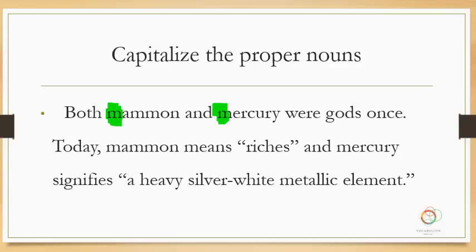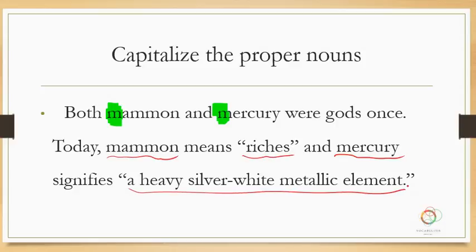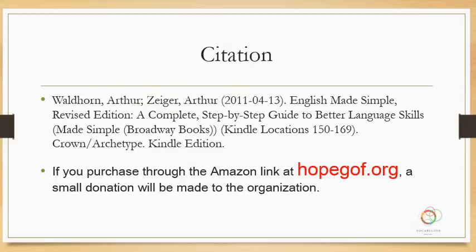If you wanted to highlight that these are particular words, you might italicize them or put quotation marks around them. The book we're using is English Made Simple, and you can purchase it using the link in the comment area. Or if you want to make a small donation to a charity, please go to hopegof.org — there's a link to Amazon there. If you go through that link to purchase the book, a small percent will be donated to the organization. It's a nonprofit charity for helping children around the world, so that would be a small contribution we can make.